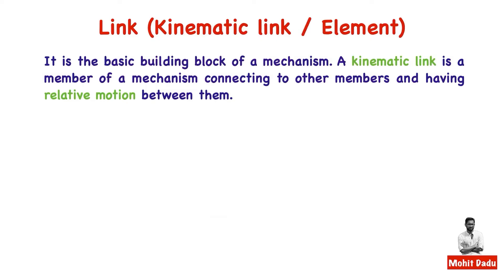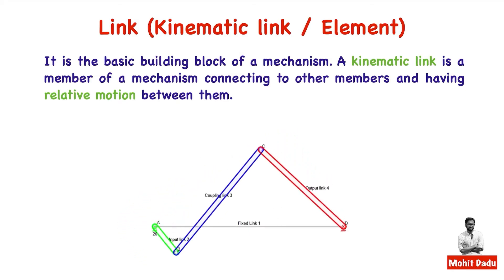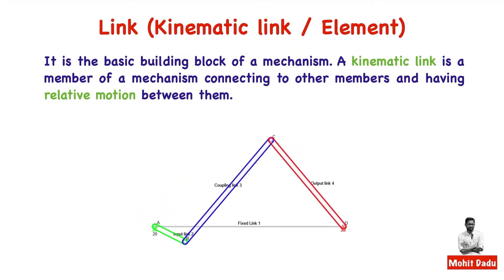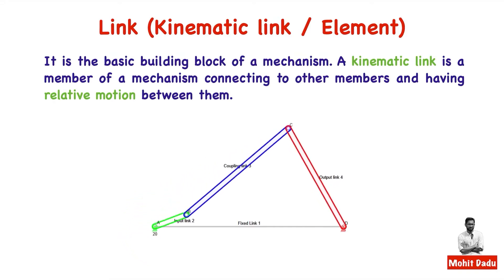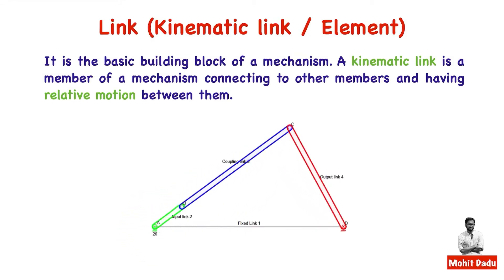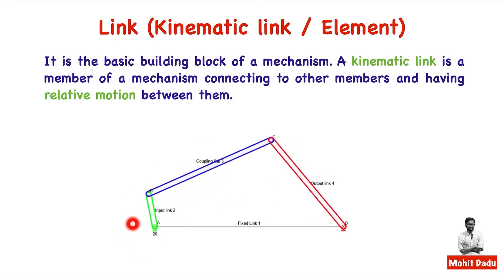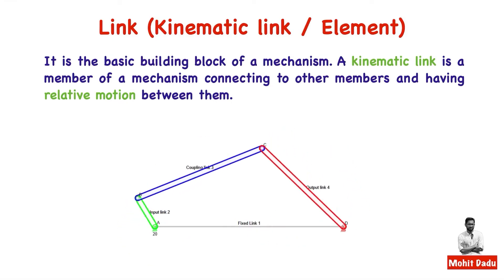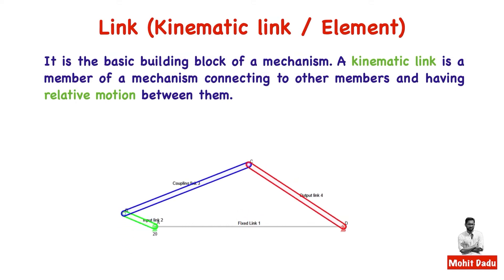A kinematic link is the member which connects to other members and has relative motion between them. In the mechanism shown here you can see four links: a fixed link numbered 1, an input link 2 where input motion is provided, an output link 4, and a blue coupling link through which motion is transmitted. This is a four-bar mechanism where links have relative motion between them.